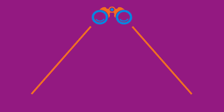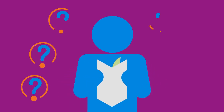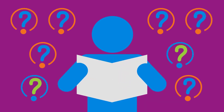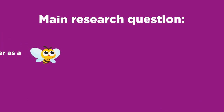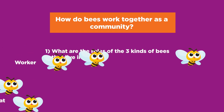Once you have a basic knowledge of your topic, you'll change your focus from reading broadly to reading specifically. Now you'll read to find answers to your research questions. Keep in mind that you may even want to change or add a question based on new information. For this video, let's say our main research question is: how do bees work together as a community? That made us wonder about the roles bees play in a hive, which led us to several supporting questions.